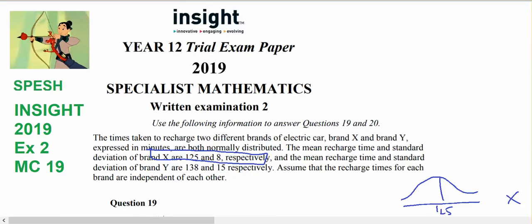This is for Year 12 Specialist Mathematics, it comes out of Insight 2019 Exam 2 multiple choice question 19. The information at the top tells me that x is normally distributed with a mean of 125 and a standard deviation of 8. So there is my x.